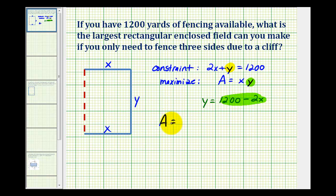And now we can substitute 1,200 minus 2x for y into the area equation and then we can maximize it. So the area is going to equal x times the quantity 1,200 minus 2x, and we'll go ahead and distribute. We'll have 1,200x minus 2x squared.